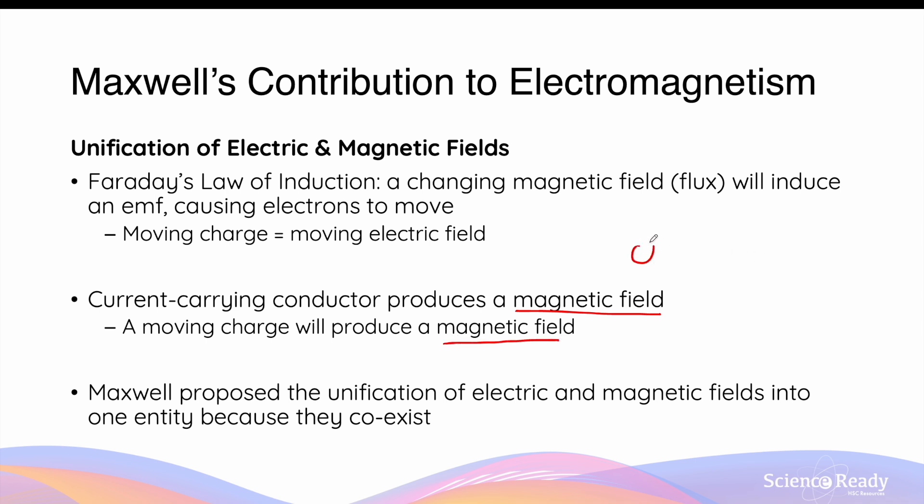In the example that we saw earlier, when you have a negative charge, and if we make this charge move in a certain direction, not only does it carry the electric field with it, the moving charge will also produce a magnetic field.